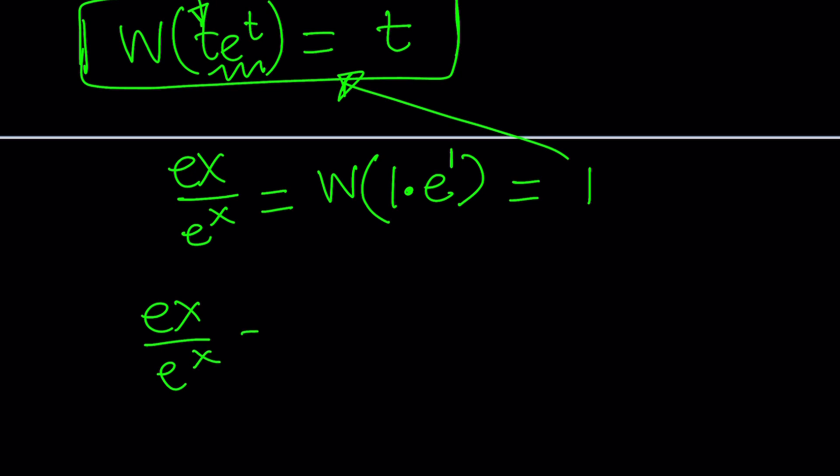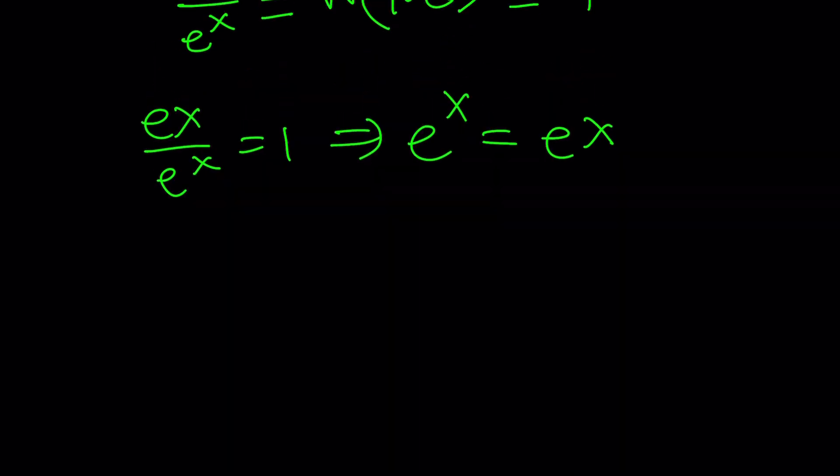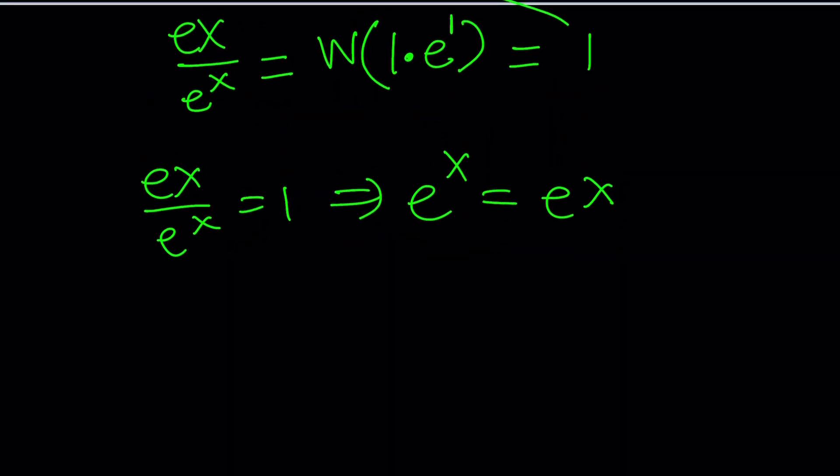Again, from this very definition of Lambert's w function, here's what we got. e x over e to the x equals one, or you can call this e to the x equals e x. Now let's go ahead and take a look at this equation and keep looking. Look very hard until you find the solution. And I'm pretty sure you did right? x equals one. But why? How did I know that? Well, e equals e. Come on, you knew that right?